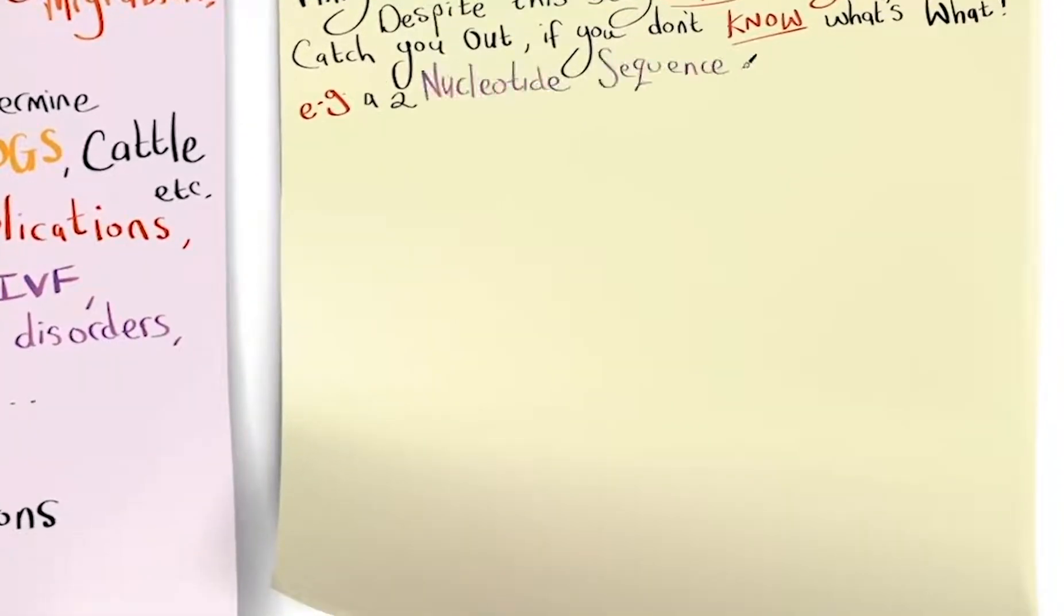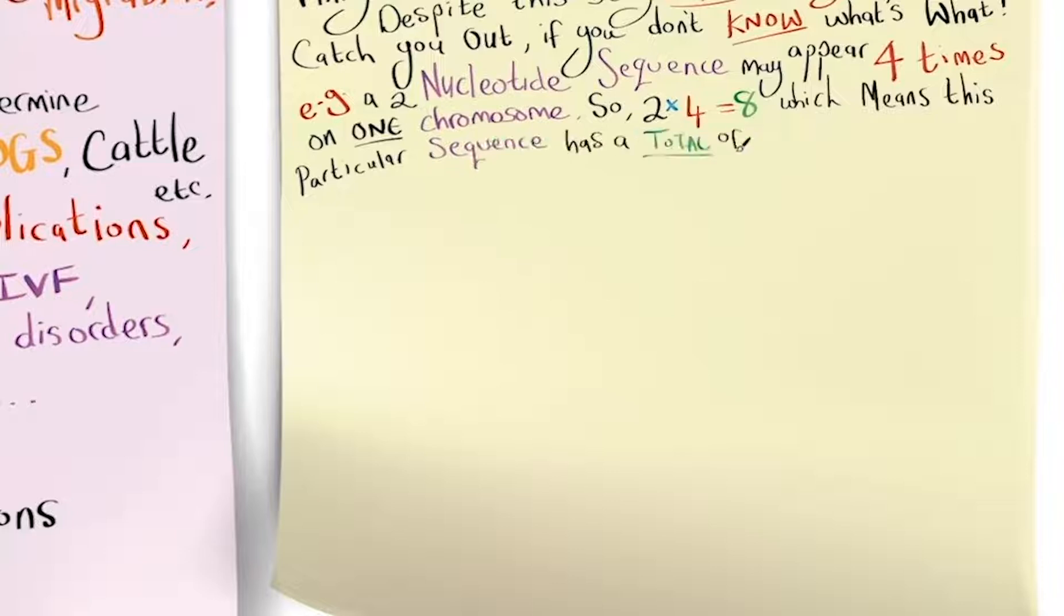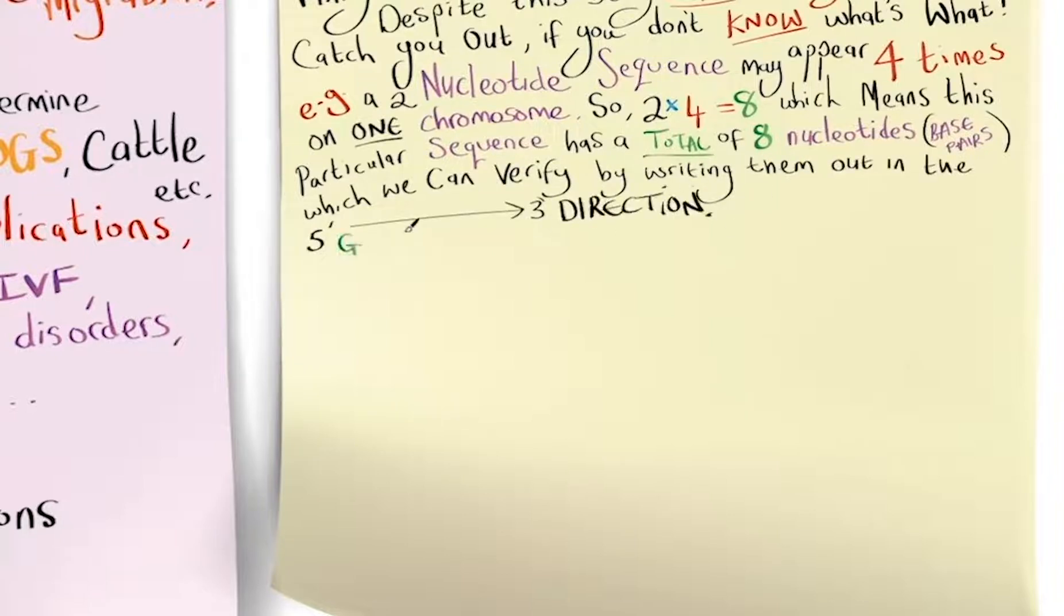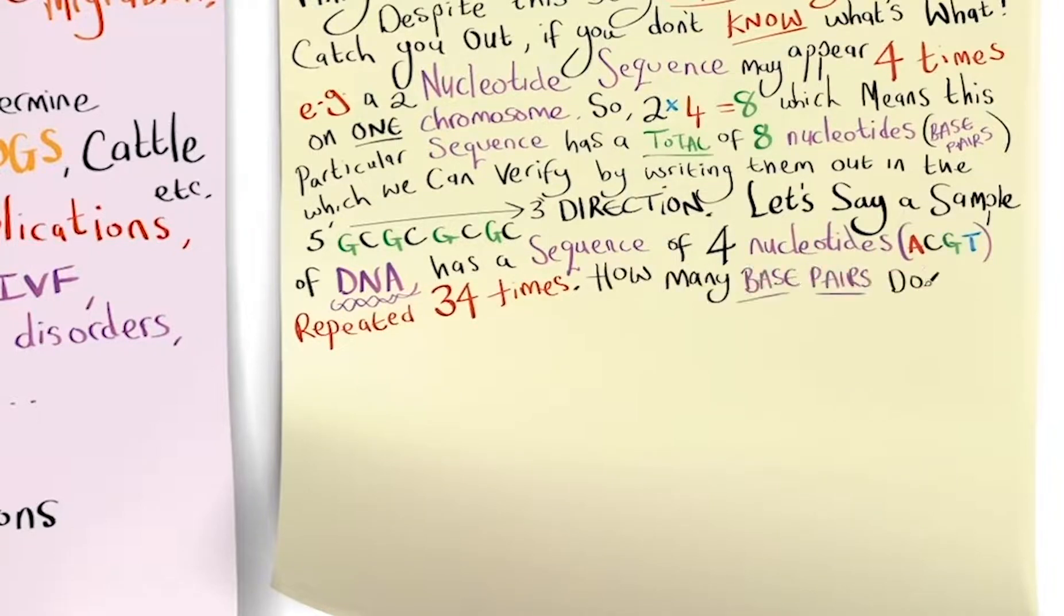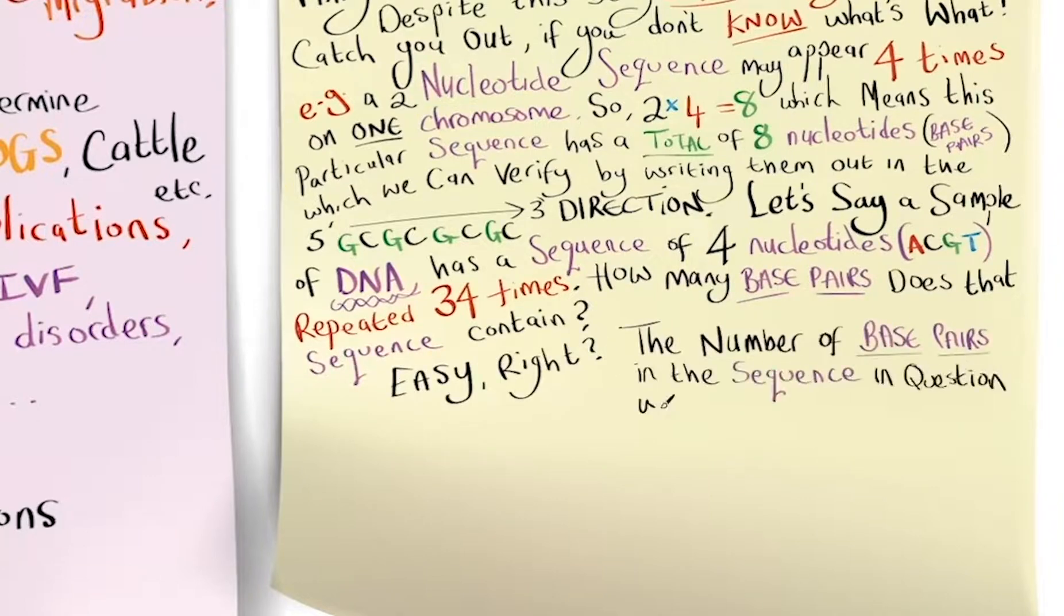For example, a two nucleotide sequence may appear four times on one chromosome. So, two times four equals eight, which means this particular sequence has a total of eight nucleotides, or base pairs, which we can verify by writing them out in the five to the three direction. For example, GC, GC, GC, GC. Let's say a sample of DNA has a sequence of four nucleotides, ACGT, repeated 34 times. How many base pairs does that sequence contain? Easy, right? The number of base pairs in the sequence in question would be four multiplied by 34 to give 136 base pairs.